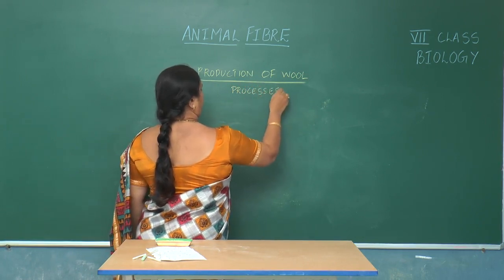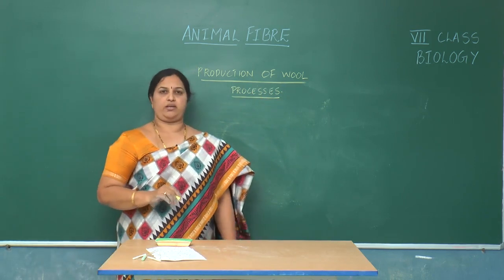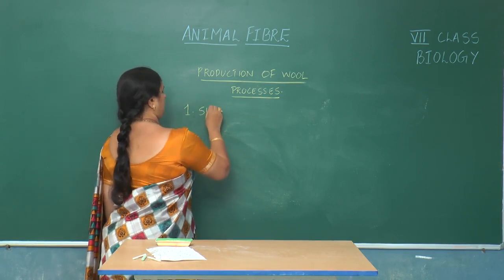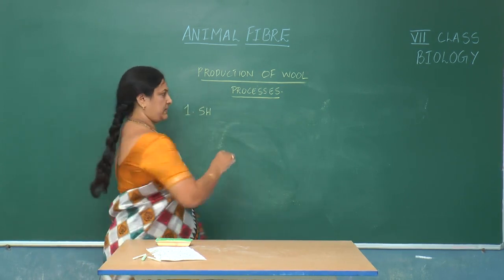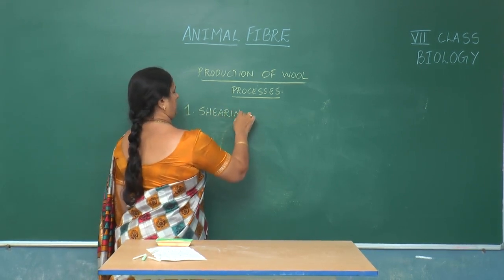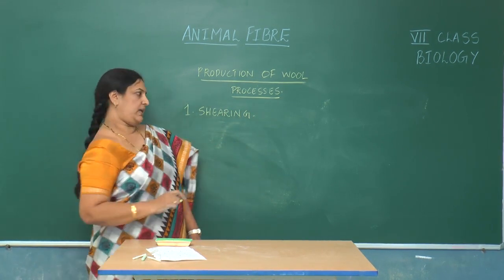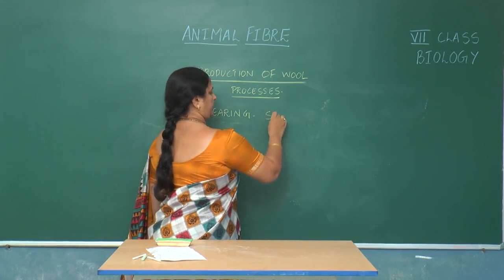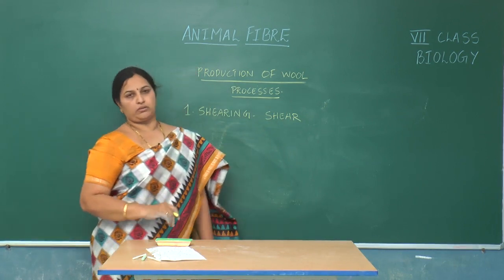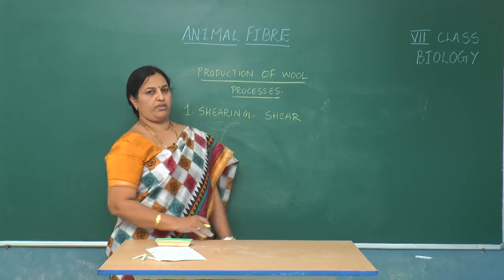In the first step, shearing is done to remove hair from the animals. The instrument used to separate hair from the animal is called shears. Before removing the hair, grease is applied to prevent damage to the skin of these animals.